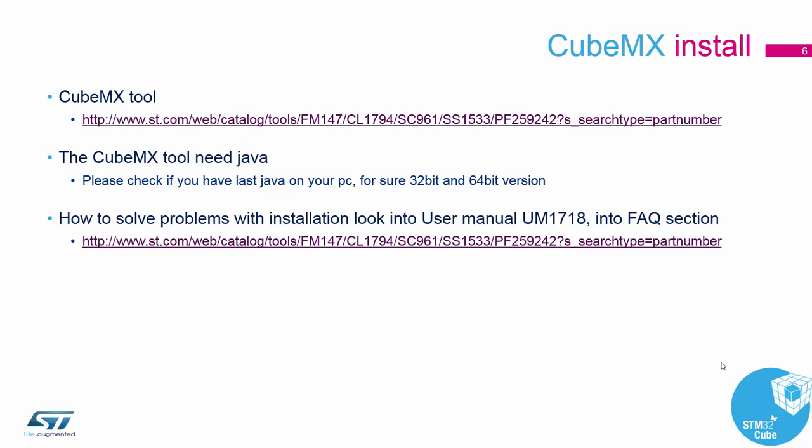For Qpemix you also need to have Java on your PC. You need to download the 32-bit or 64-bit Java version. In case you face some issues during the installation or problems with Java, I recommend looking at the Qpemix user manual number 1718, in the FAQ section, where the most common problems during installation are covered.